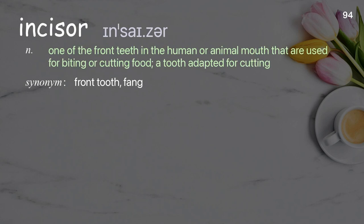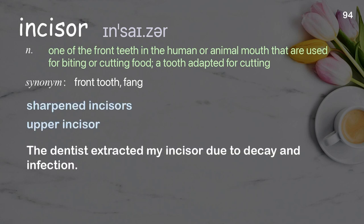Incisor: One of the front teeth in the human or animal mouth that are used for biting or cutting food; a tooth adapted for cutting. Examples: Sharpened incisors. Upper incisor. The dentist extracted my incisor due to decay and infection.